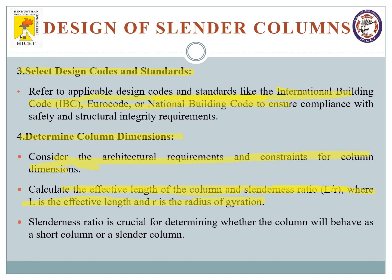The slenderness ratio gives an idea of how slender the column is. It is calculated as L divided by R, where L is the effective length and R is the radius of gyration. The slenderness ratio is a crucial factor for determining whether the column will behave as a short column or a slender column. If the slenderness ratio corresponds to a slender column, the design parameters have to be changed and the design done per codal provisions for slender columns.